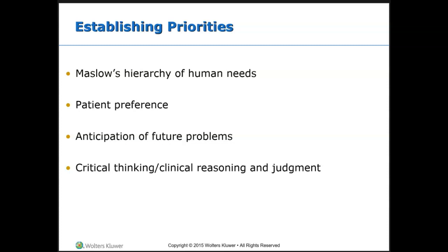Once the health problem or human response to the health problem has been identified, nurses then ask: what is important information? What is relevant to the health problem? What is unrelated? We focus on the ones that are related and set aside the ones that are unrelated to what's going on, because there's going to be a lot of erroneous information that isn't relevant. It takes time to figure out what is relevant and what isn't.